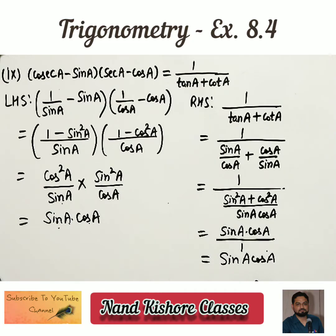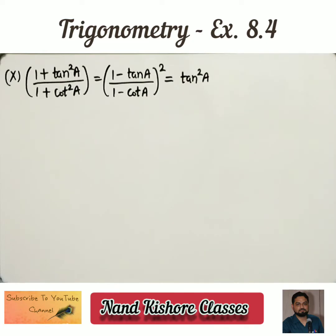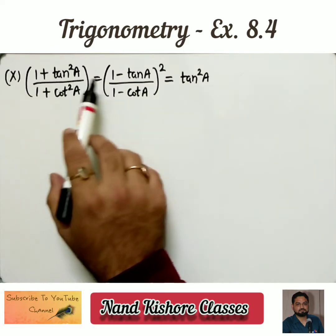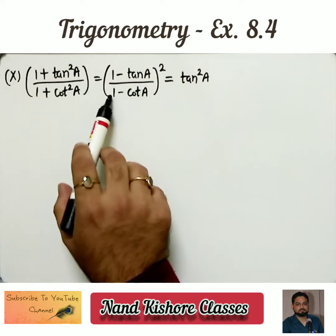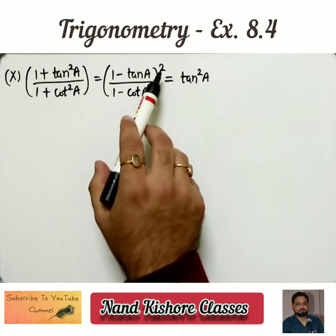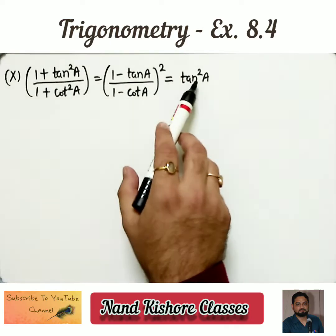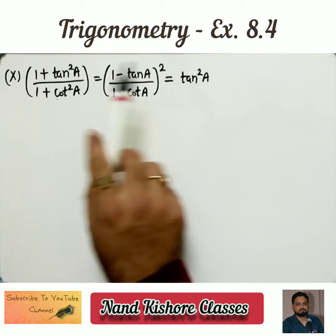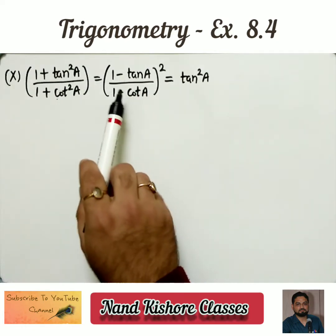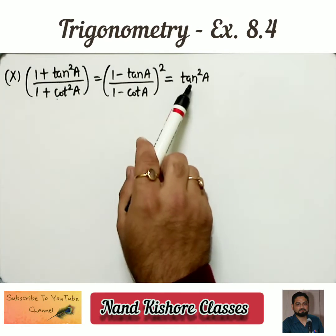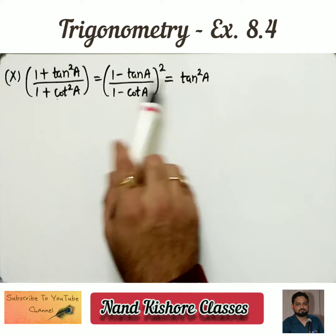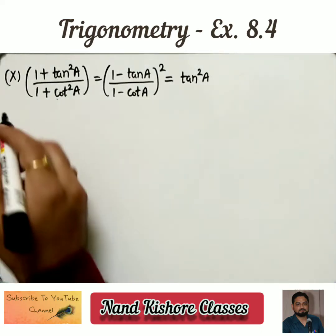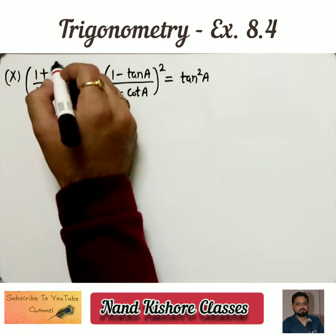Tenth part. Look at the question: (1 plus tan square a) upon (1 plus cot square a) equals (1 minus tan a upon 1 minus cotangent a) whole square, equals tan square a. We need to prove the first term equal to tan square a and the second term equal to tan square a, which proves all three are equal.